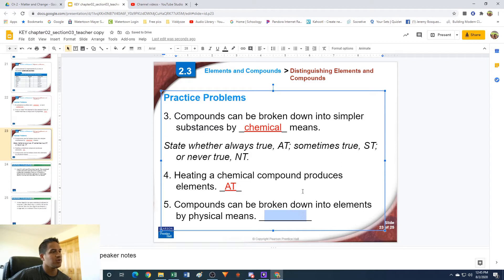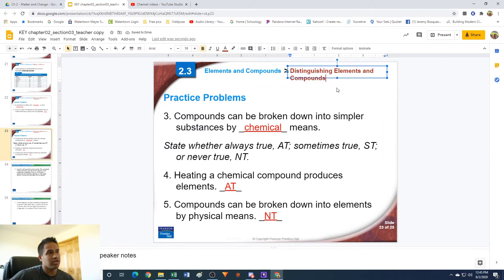Number five: compounds can be broken down into elements by physical means. This is never true. Compounds cannot be broken down physically. They can only be broken down chemically, so not true.